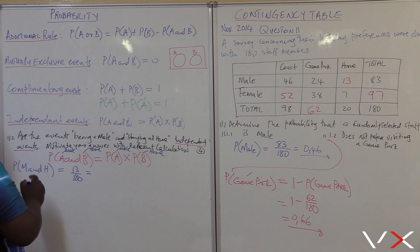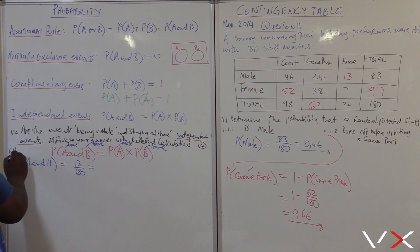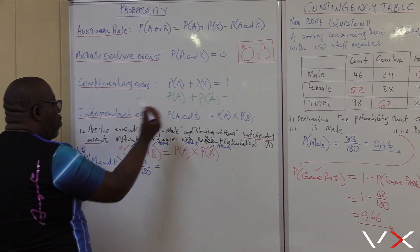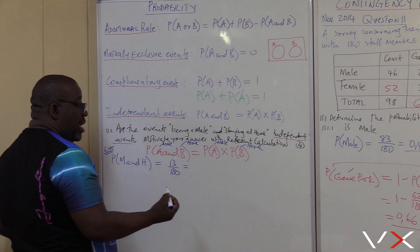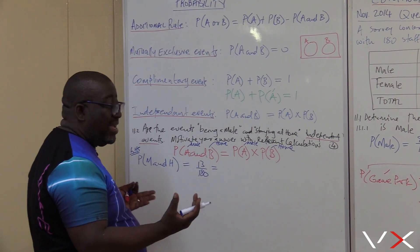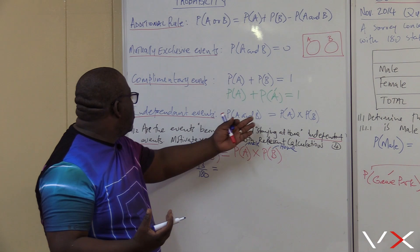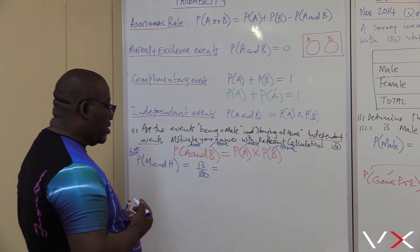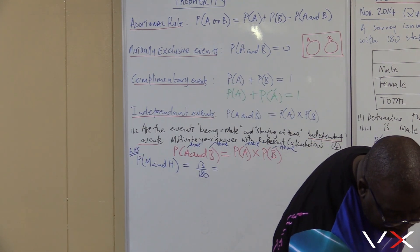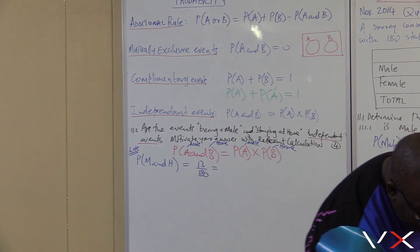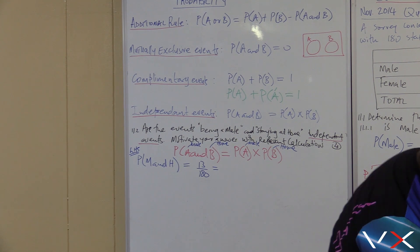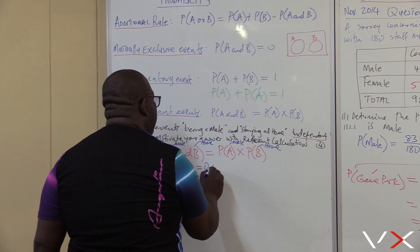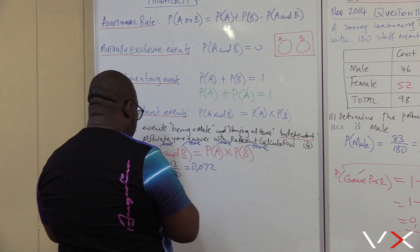I'm taking the left-hand side first and seeing what I get. After that I'll work on the right-hand side. If both sides give exactly the same value, then the two events are independent. 13 over 180 gives us 0.072. That's the first solution we get from the left-hand side.